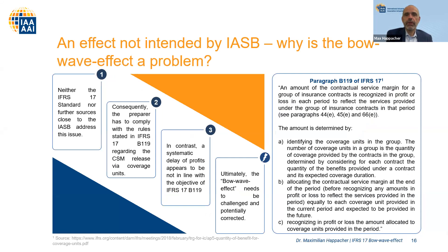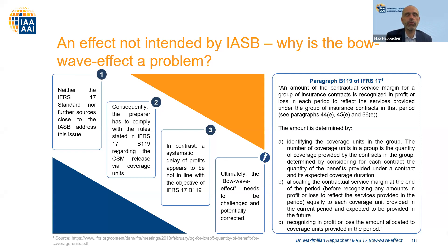What we realized is that neither the standard itself nor any other sources address this type of effect, because it's something outside financial theory but it is reality. We have the problem that reality does not fit the theory — typically a problem of the model, not of reality, but we have to deal with it nonetheless. Something like the bow wave effect coming from these real-world over-returns, but also from the release of the time value of options and guarantees that is put into the unlocking of the CSM, is definitely not intended by the standard, leading to an end-loaded profit pattern.